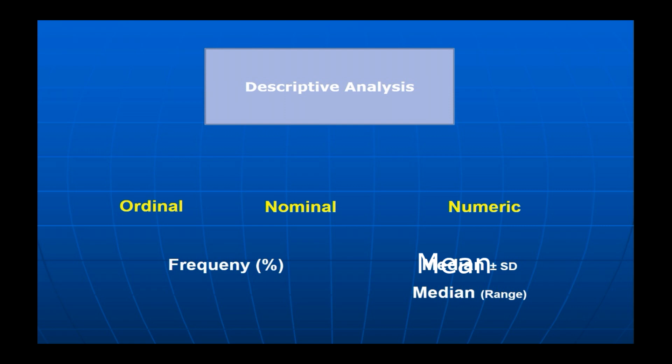Univariate analysis is descriptive and depends on the type of variable. If it's ordinal or nominal, it is expressed with frequency and percentage. If it's numeric and normally distributed, it is expressed with mean and standard deviation; otherwise with median and range.